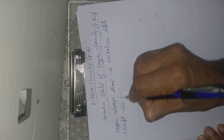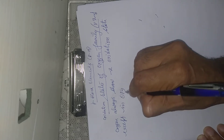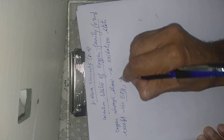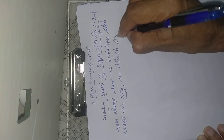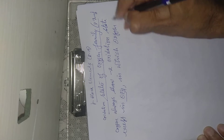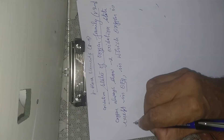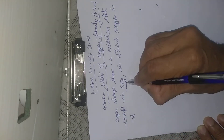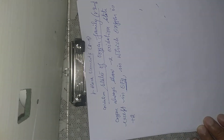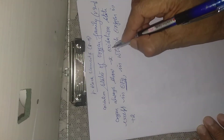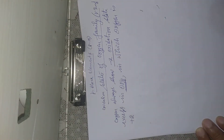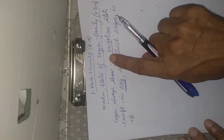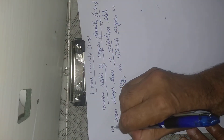In OF2, oxygen shows plus two oxidation state. In all other compounds, oxygen's oxidation state is minus two (or minus one in some cases). Overall, oxygen ideally shows negative oxidation states.